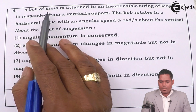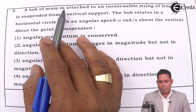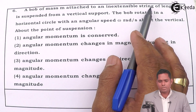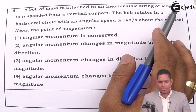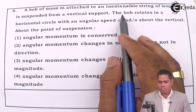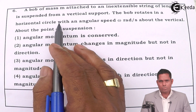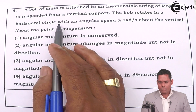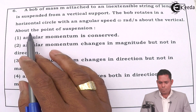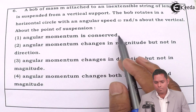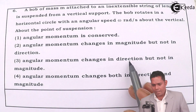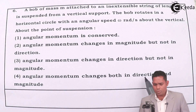A bob of mass M attached to an inextensible string of length L is suspended from a vertical support. The bob rotates in a horizontal circle — so it is a conical pendulum — with an angular velocity omega radians per second. About the point of suspension: (A) angular momentum is conserved, (B) angular momentum changes in magnitude but not in direction, (C) angular momentum changes in direction but not magnitude, (D) angular momentum changes both in magnitude and direction.